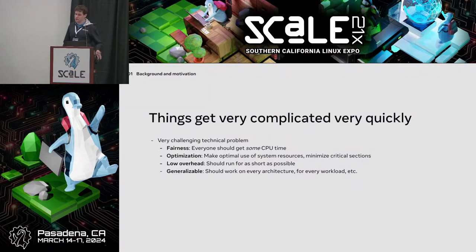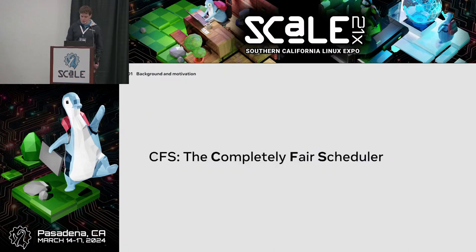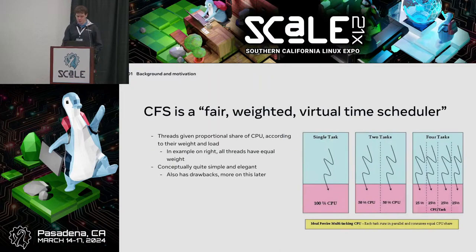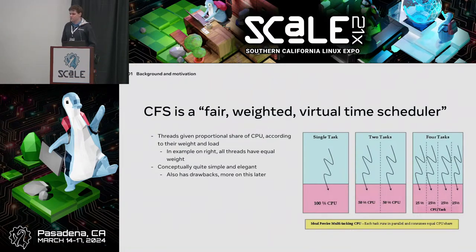There are a lot of different constraints depending on the environment you run on. CFS — the slides may be a little outdated — but CFS has been the default kernel scheduler, the Completely Fair Scheduler, for many years. In the last year it got replaced by EEVDF, which works similarly with some differences, but I will largely talk about CFS as it's been around a lot longer in Linux. It's called a fair weighted virtual time scheduler, which is a wordy way to describe something that tries to preserve fairness.